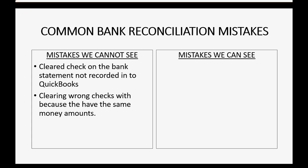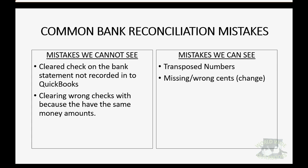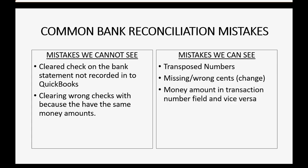The good news is there are mistakes that we can see just by looking carefully. For example, if the same transaction in both places has a transposed number, we can find that difference. If the change column is wrong — people who record transactions quickly sometimes leave out the cents — or when the money amount winds up in the transaction number field and the transaction number winds up in the money field, those are things we will address one by one in this video.